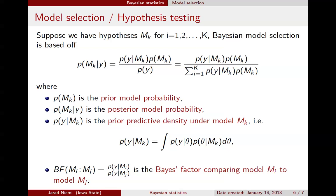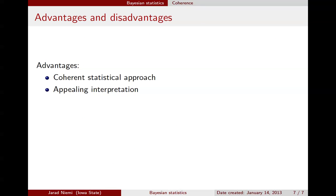We've discussed the basic framework of a number of inferential approaches from a Bayesian perspective. I want to take one last slide to talk about some advantages and disadvantages of the Bayesian approach — two advantages and two disadvantages. The first advantage is that there is a coherent statistical approach to doing Bayesian statistics — the main purpose of today's mini-lecture. You simply compute the probability of A given B, where A is what's unknown and B is what's known, and every problem is approached using that same framework. The second advantage is that from a scientific perspective, the interpretation of a Bayesian analysis is very straightforward.